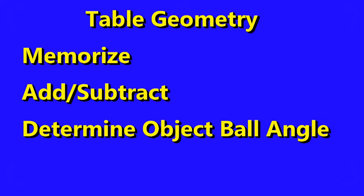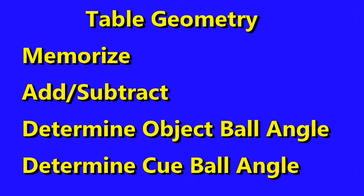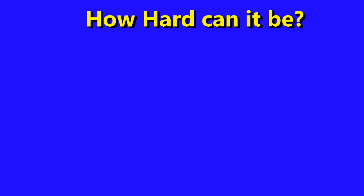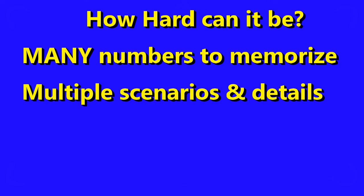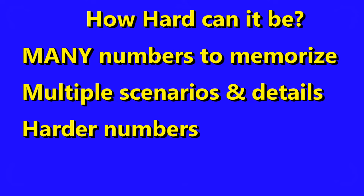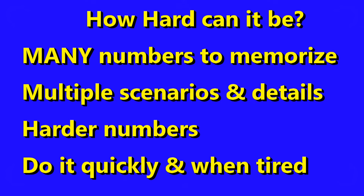Okay, let's get on with table geometry. The table geometry technique requires good memorization and some arithmetic. You actually compute the cut angle by separately estimating the object ball to pocket angle and the cue ball to ghost ball angle, both relative to the table. Then usually subtract one from the other to get the cut angle. That doesn't sound too hard — get two numbers and subtract. 50 minus 20 is easy. But there are many numbers to memorize, details and scenarios to learn, and harder numbers to subtract in your head. How about 83 minus 49?